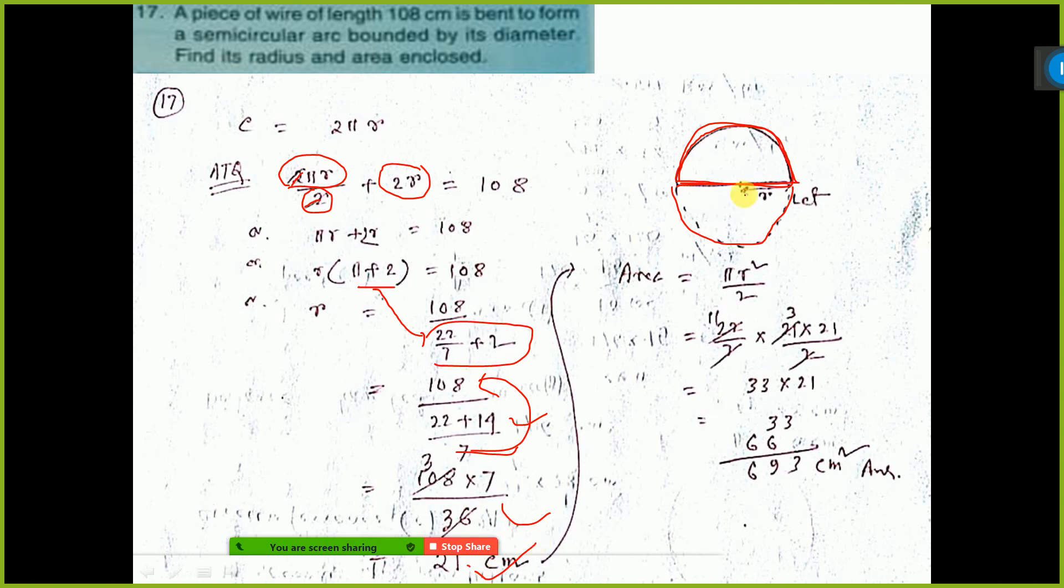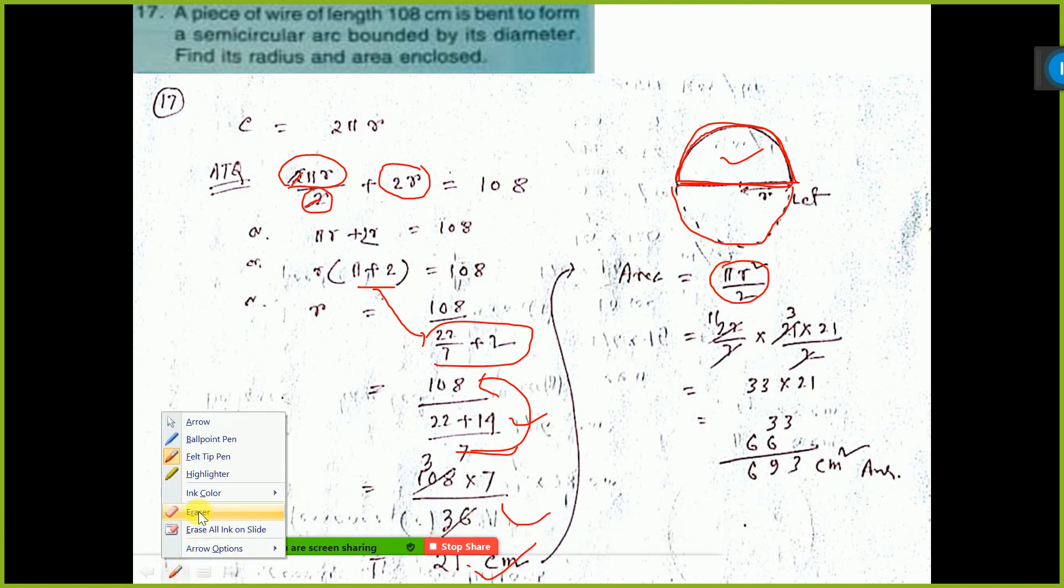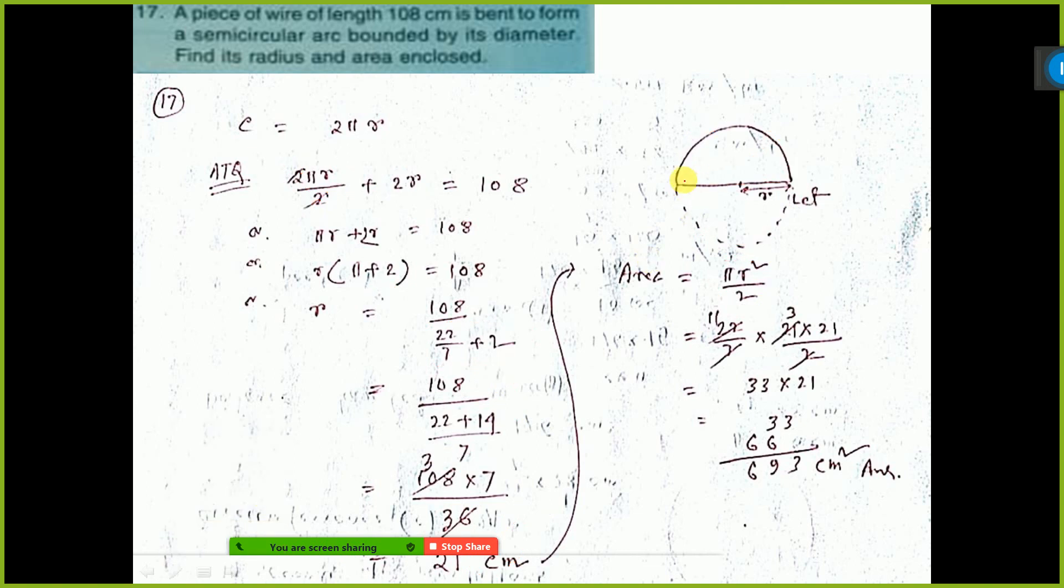Now area of this semicircle, it will be πr² by 2. Because total circle's area is πr². But here, see we have semicircle, so it will be πr² by 2.